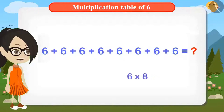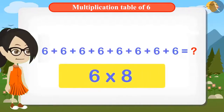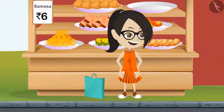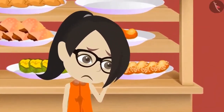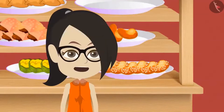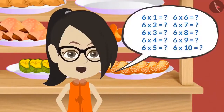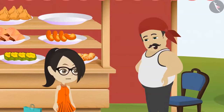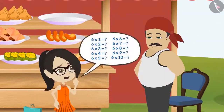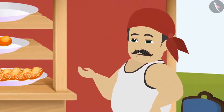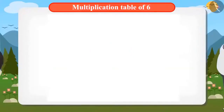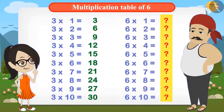Multiplying 6 by 8 is better than adding 6 repeatedly 8 times. But there is a problem — I do not know the table of 6. If I had known the table of 6, I could have immediately calculated the cost of 8 samosas. Uncle, I do not know the table of 6. So what? Do you know the multiplication table of 3? Yes, I know the multiplication table of 3. Then you can easily find out the multiplication table of 6 from the multiplication table of 3.